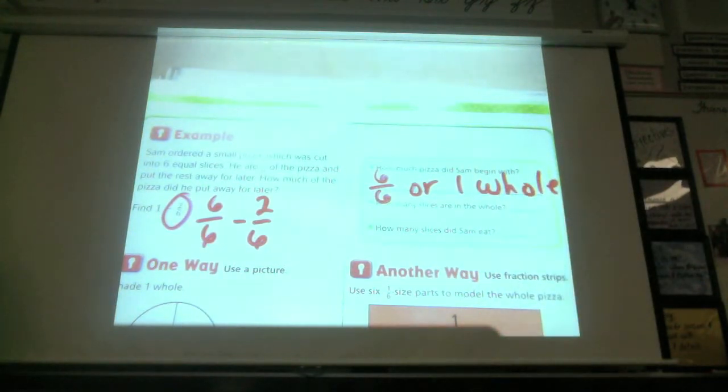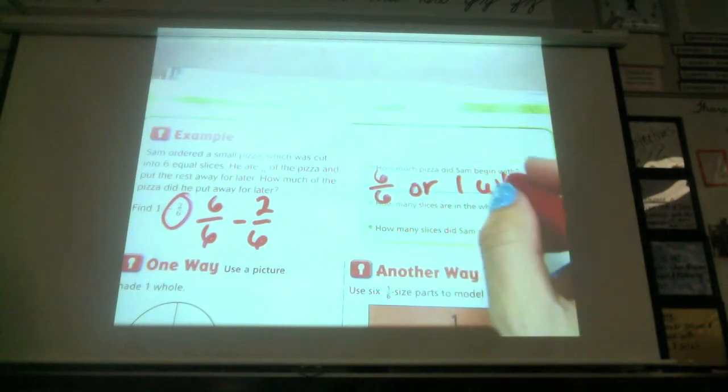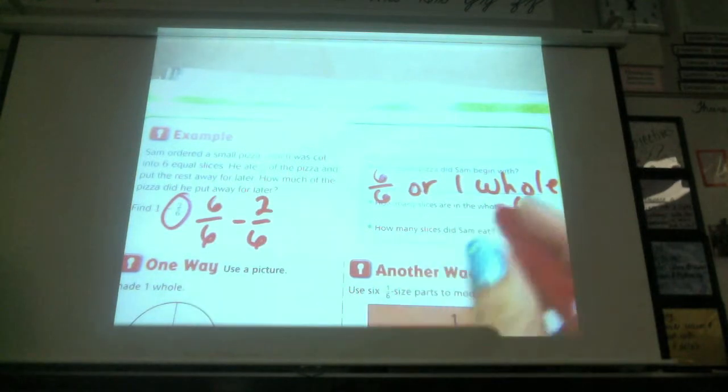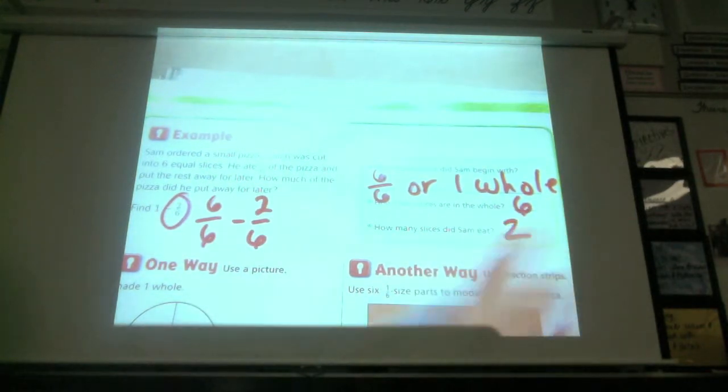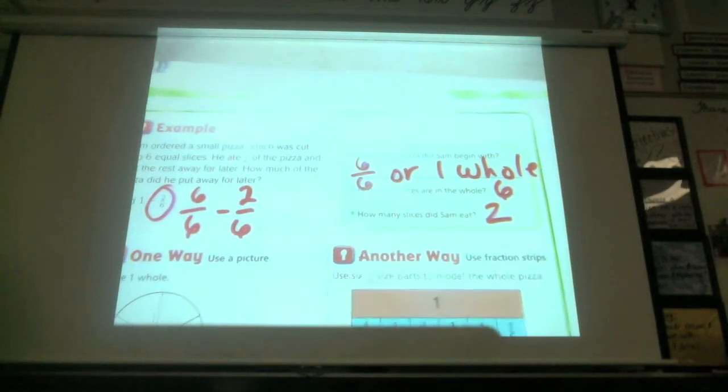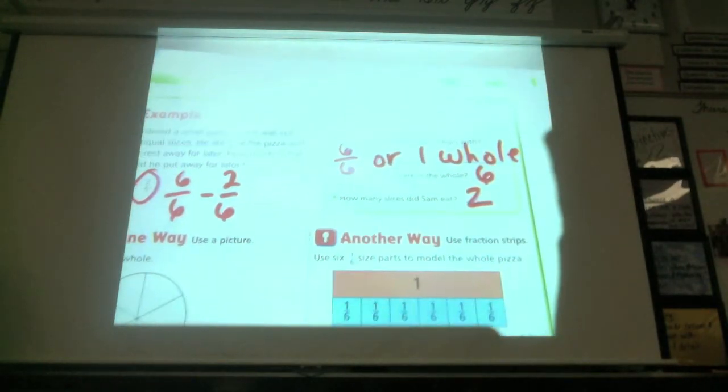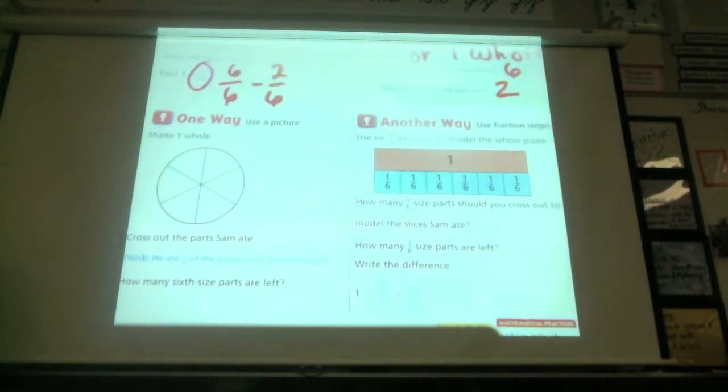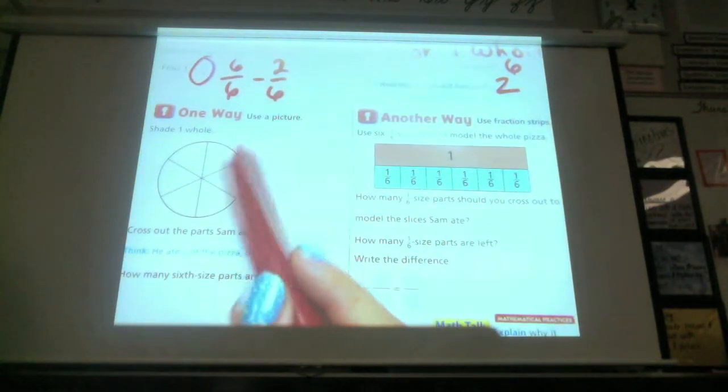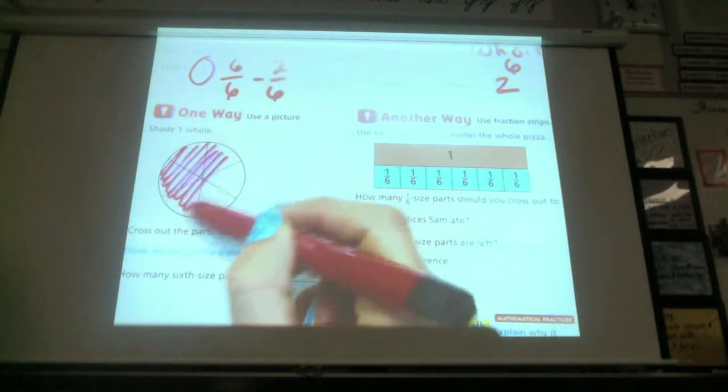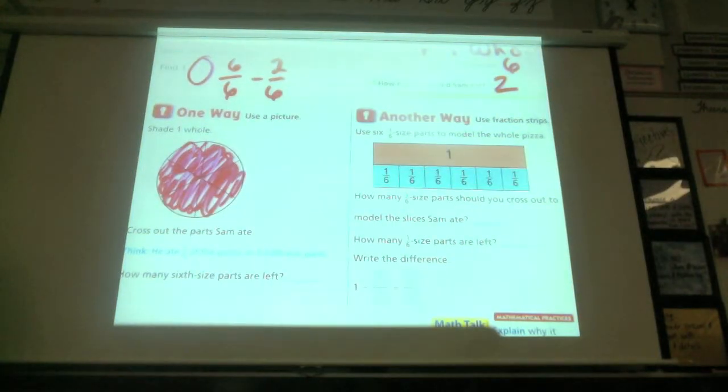How many slices did he eat? How many slices are in the whole? Everybody? Six. And how many did he eat? Two. You can tell right there how many are going to be left, right? How many are going to be left? Four. Four, but it's got to be a fraction. So four-sixths. Four-sixths, you guys got this. We don't even have to go through it, but we're going to do it anyways. One way to solve the problem. Shade one whole. Okay, I'm going to shade one whole. Go ahead, shade one whole.